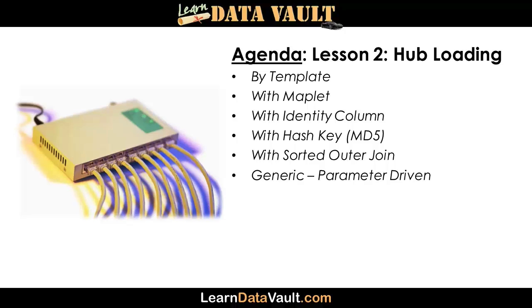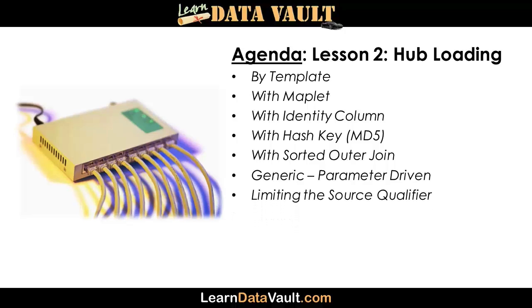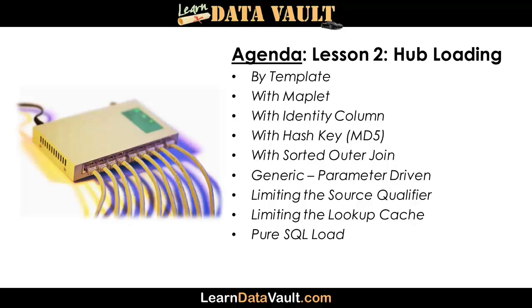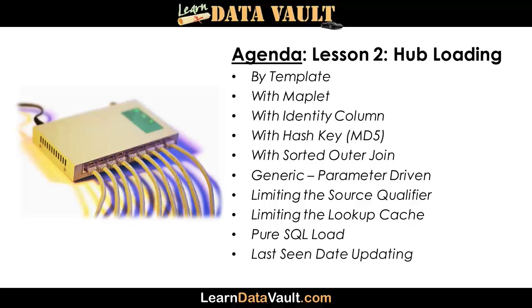With the generic approach, you lose a bit of metadata, but you gain the ability to maintain all hub loads in a single place. Then I'm going to give you some code to limit the source qualifier — which touches a bit on performance and tuning — and another map for limiting the lookup cache with the SQL for that. Then we'll drive into the pure SQL loading of a hub, in case you're interested in doing this inside the database. Finally, we'll finish lesson two with last seen date updating, which isn't something you should do all the time, especially if you have an audit trail available.